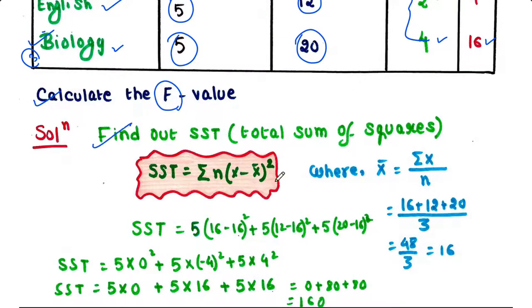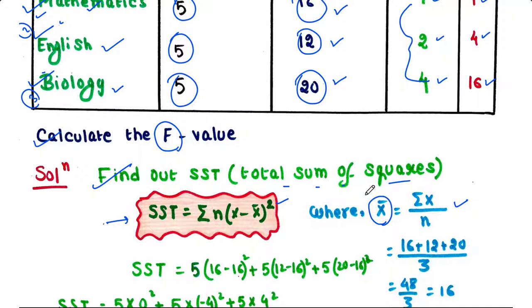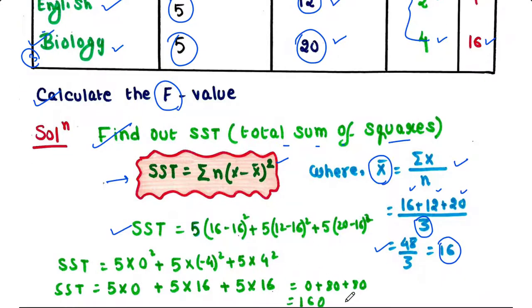Now find out SST or total sum of squares. The formula to find out SST is summation of n into x minus x bar whole square, where x bar (that is mean) is equal to summation of x divided by n. So here we have three x values: 16 plus 12 plus 20 divided by 3. That yields 48 by 3 is equal to 16. Now we can calculate SST. If we calculate SST, we will get the value 160.